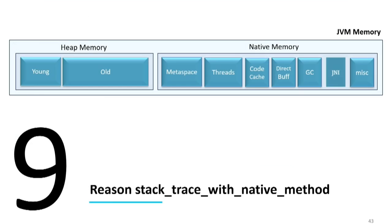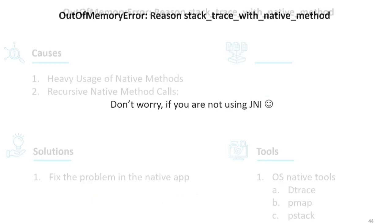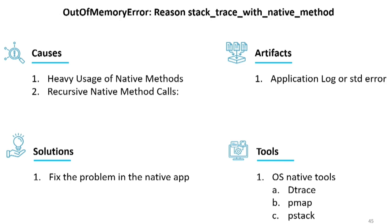The ninth type of out-of-memory error is called 'reason stack trace with native method'. This happens when your native memory region saturates — specifically only if your Java process is connecting natively with a C or C++ application via JNI. Typically most of us don't use JNI, so you don't have to worry about it. When it does happen, use operating system native tools like DTrace, pmap, or pstack to look into what is happening in the native process.